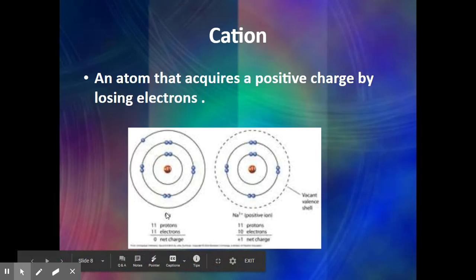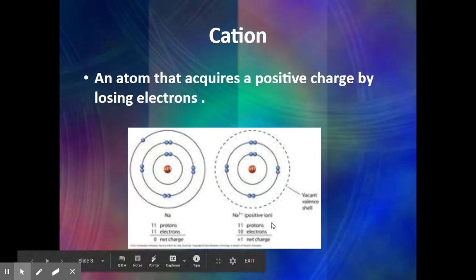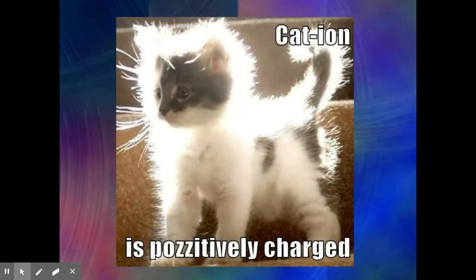Sodium has one electron in its outer shell, so it wants to get rid of that. If sodium loses that one electron, the lower shell becomes the outer one and it now has 8 in its outer shell. Since we got rid of one electron, it has a net charge of plus 1 — this is called a cation. Ions with a positive charge are called cations. A helpful memory trick: 'cat' has a T, which looks like a plus sign.